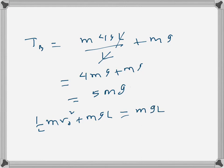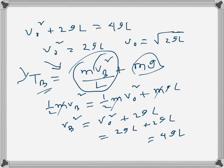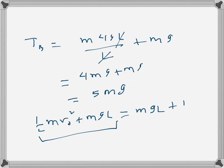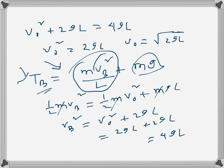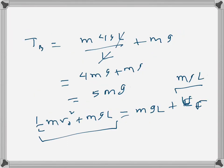Previously without friction, the ball reached point D at height 2l with potential energy 2mgl. Now it only reaches C at height l with energy mgl. The difference — mgl — is the energy lost to friction. Therefore, the decrease in mechanical energy during this motion from A to C is mgl.